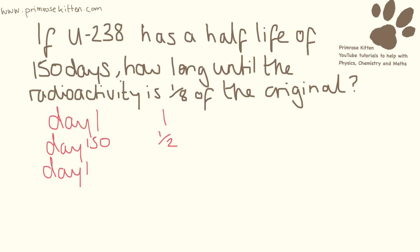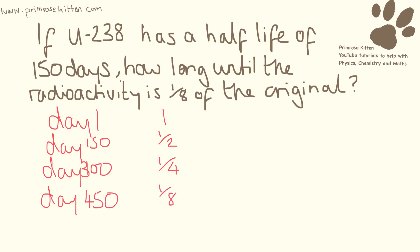Another half-life later, so adding on another 150 days, we get to day 300, and we are at a quarter of the original radioactivity. Add on another 150 days and we are at day 450, and half of a quarter is an eighth. So the answer is it will be 450 days until the radioactivity is one-eighth of the original.